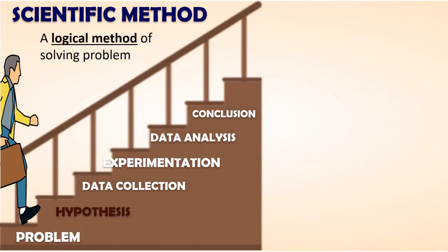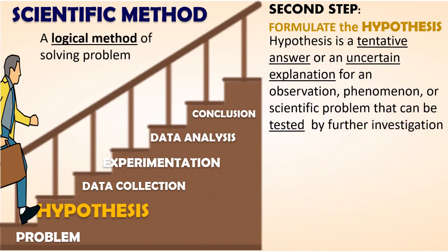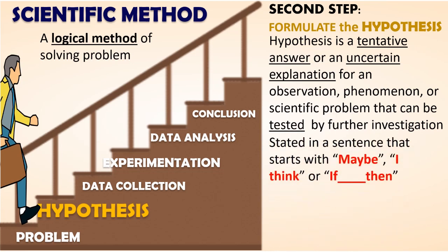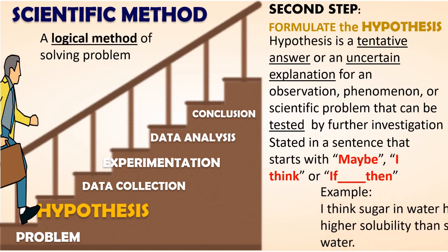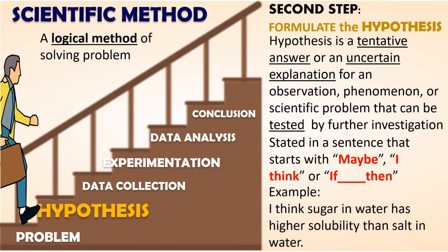The next step is the formulation of hypothesis. Hypothesis is the tentative answer or an uncertain explanation for an observation, phenomenon, or scientific problem that can be tested by further investigation. It is stated in a sentence or a statement which starts with maybe, I think, or using the if and then statement. For example, I think sugar in water has higher solubility than salt in water.